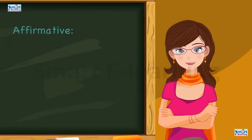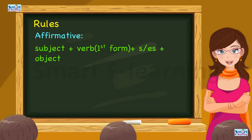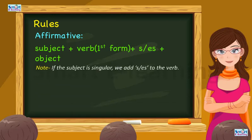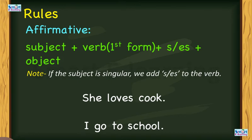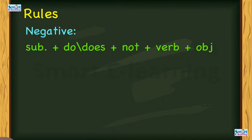It is used for habitual action. Rules - Affirmative: subject plus verb first form plus s or es plus object. Note: if the subject is singular, we add s or es to the verb. She loves cook. I go to school.